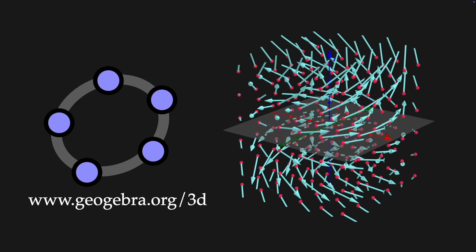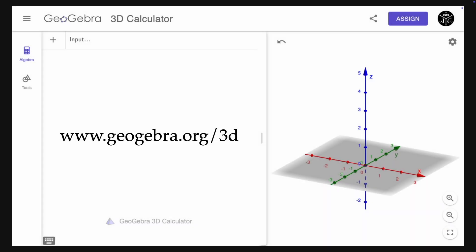First, let me show you how to plot vector fields in GeoGebra. So let's go to geogebra.org/3d. This link should open the 3D calculator.